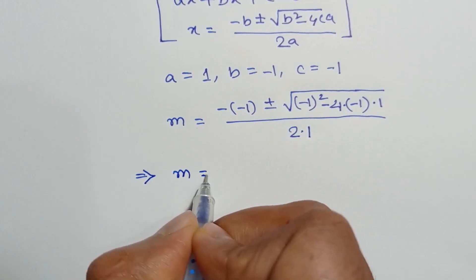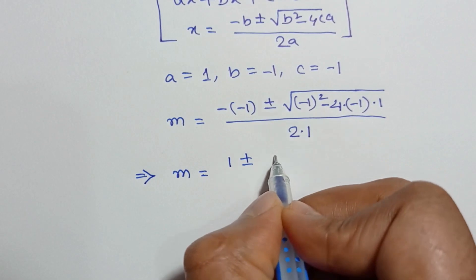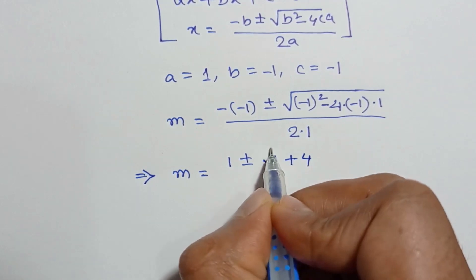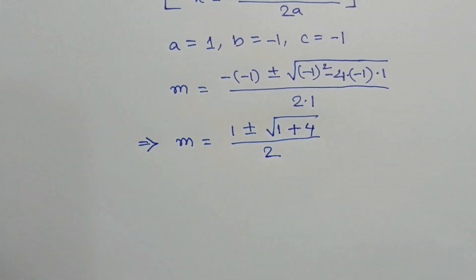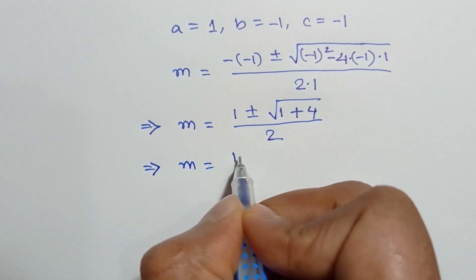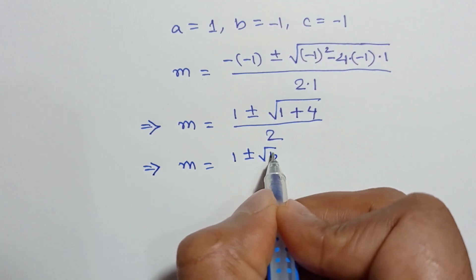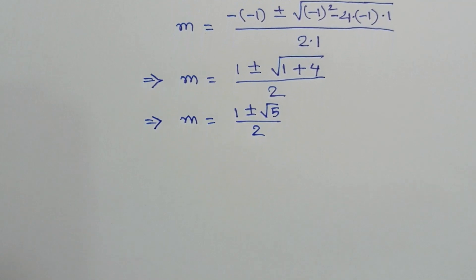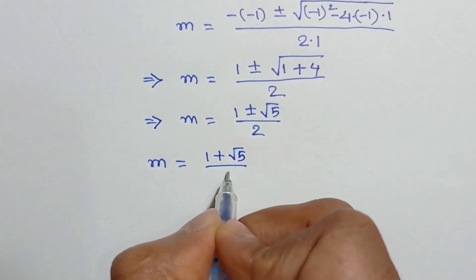So m = (1 ± √(1 + 4)) / 2, which gives m = (1 ± √5) / 2. Therefore m = (1 + √5) / 2 or m = (1 − √5) / 2.